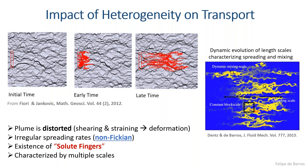We have the existence of solute fingers or fingering that are very complicated to model. Looking at the picture on the right, we have different scales where different physical processes occur. There is a spreading scale with fluctuations of the velocity field, and a mixing scale where diffusion is actually acting. There's also an artificial scale imposed by numerical modeling — the grid block scale where fluctuations are somehow homogenized. The point is that we have multiple scales in solute transport in such heterogeneous media.